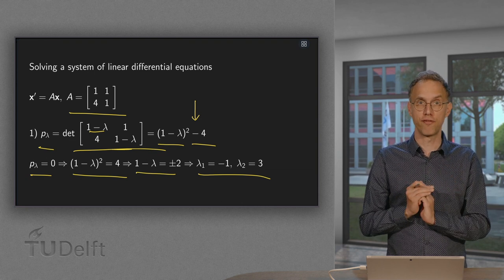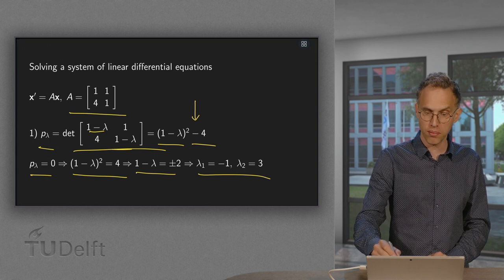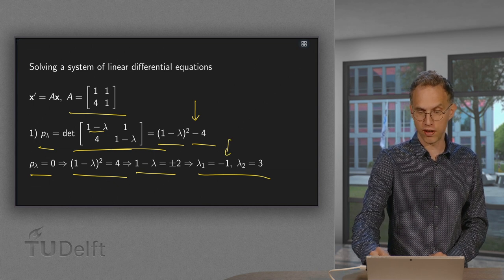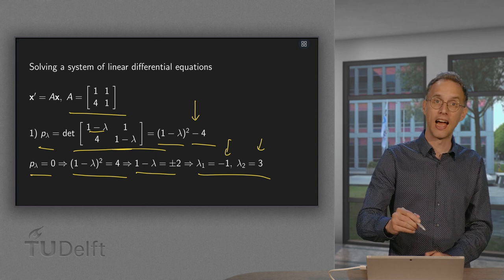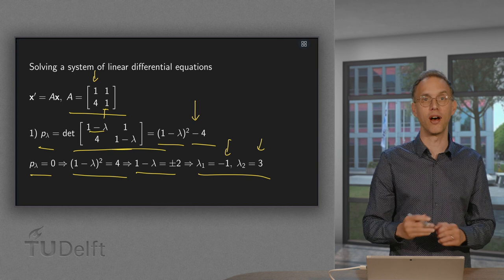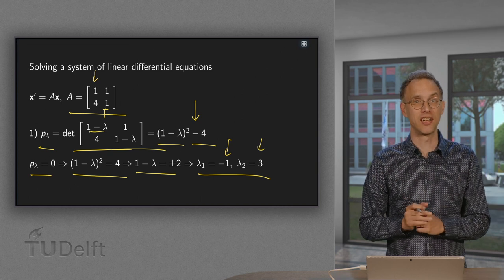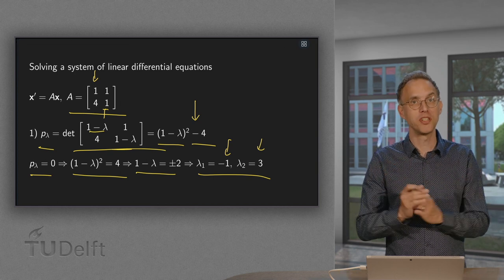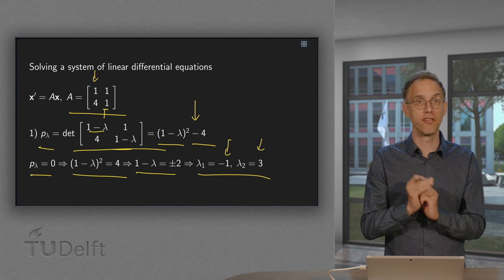And here we have a fast check. The sum of these eigenvalues, so -1 plus 3 equals 2, has to be equal to the trace of the matrix A. So equal to 1 plus 1 equals 2 as well. So this is a check. So sometimes people make mistakes in the eigenvalues. Here you have a check.